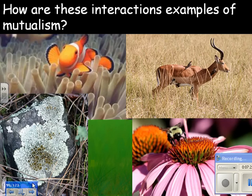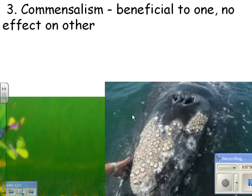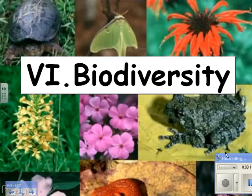Finally, commensalism is when one species benefits and the other seems unaffected. For example, barnacles attach to whales — the barnacles benefit by being transported to new food sources and by having their offspring dispersed across the ocean, while the whale does not appear to be harmed or helped by the barnacles.